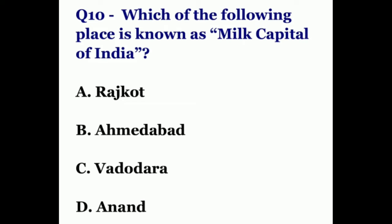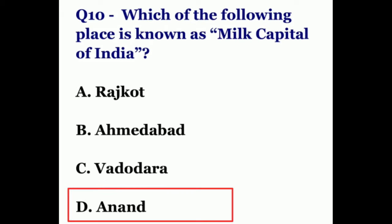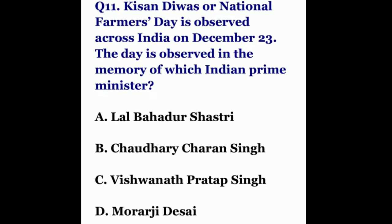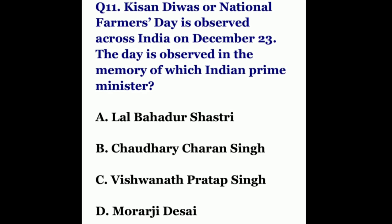Question number ten: which place is known as the milk capital of India? The options are Rajkot, Ahmedabad, Vadodara, or Anand. The correct answer is Anand. Anand is a district of Gujarat, also known as the milk capital of India. The most famous dairy cooperative of India, Amul, is headquartered at Anand.